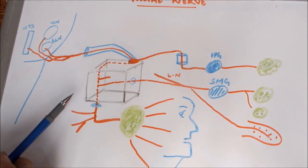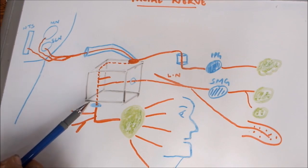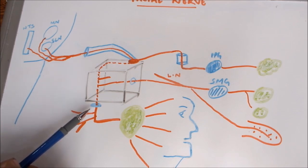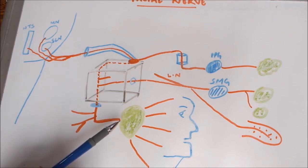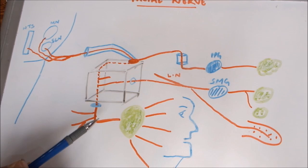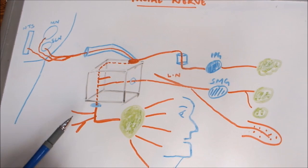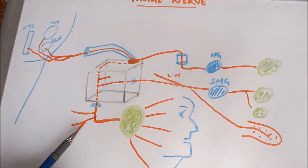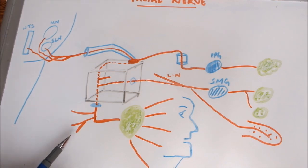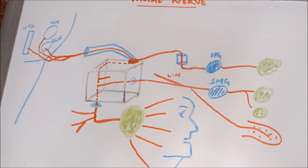Continuing its course, the facial nerve then runs downwards and exits the middle ear through the stylomastoid foramen. After exiting, this portion is known as the extracranial part. Here the facial nerve gives three branches: the posterior auricular branch, the nerve to the posterior belly of the digastric, and the nerve to the stylohyoid muscle. These are muscles derived from the second branchial arch.